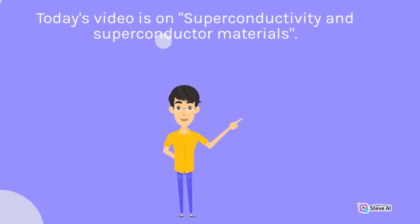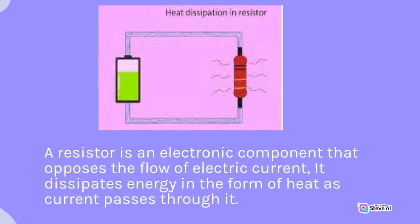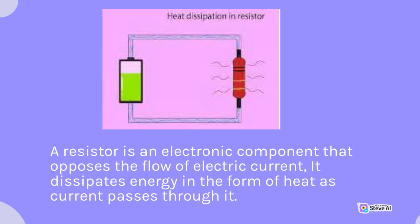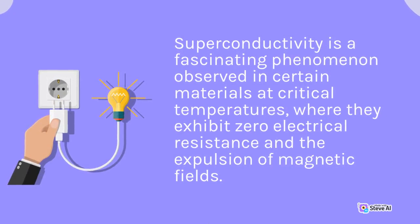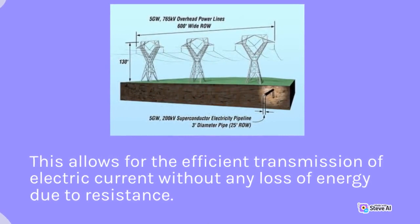A resistor is an electronic component that opposes the flow of electric current; it dissipates energy in the form of heat as current passes through it. Superconductivity is a fascinating phenomenon observed in certain materials at critical temperatures, where they exhibit zero electrical resistance and expulsion of magnetic fields, allowing for efficient transmission of electric current without any loss of energy due to resistance.